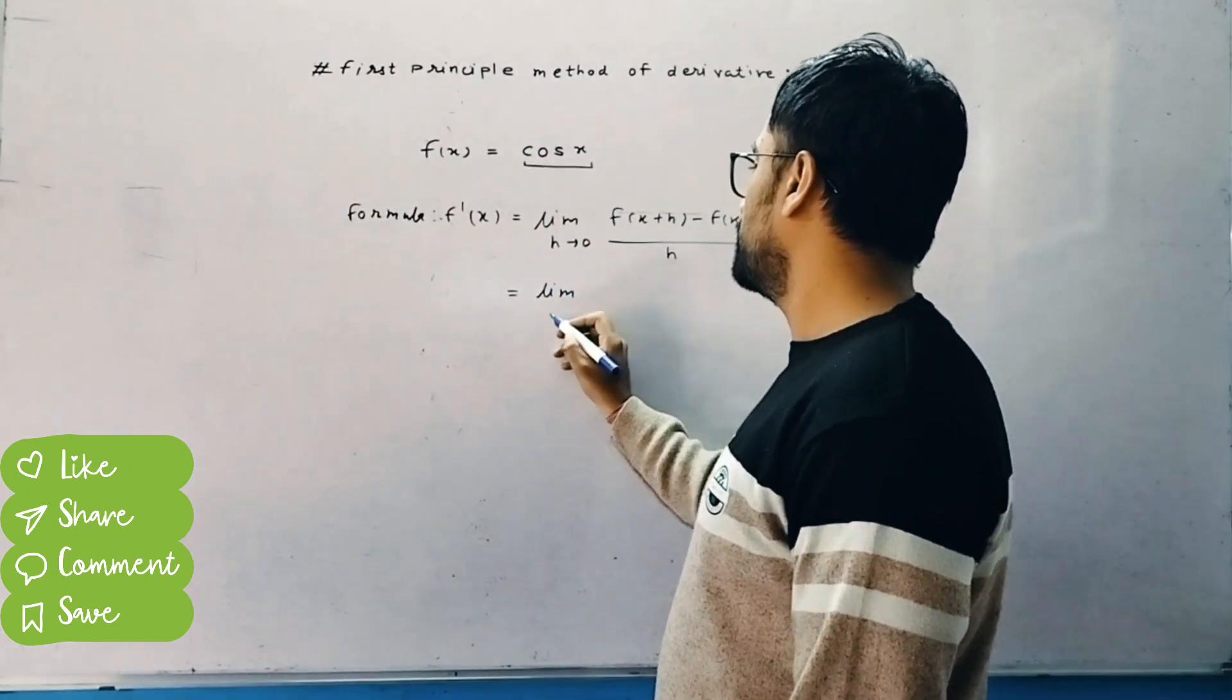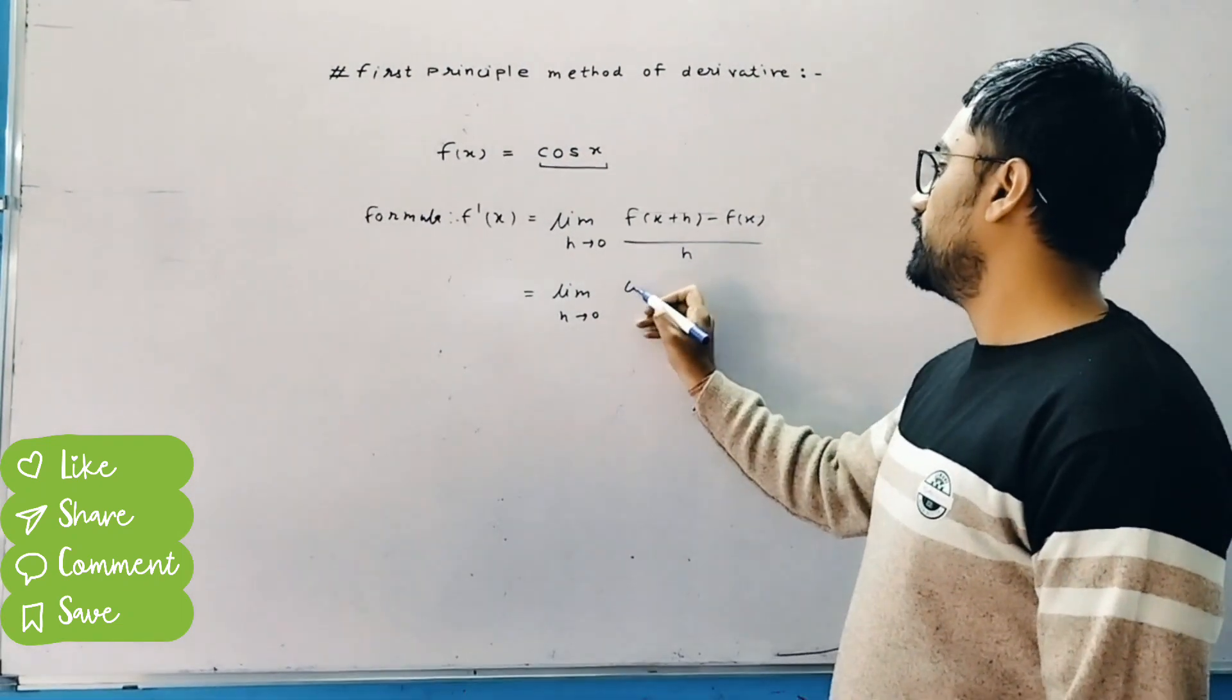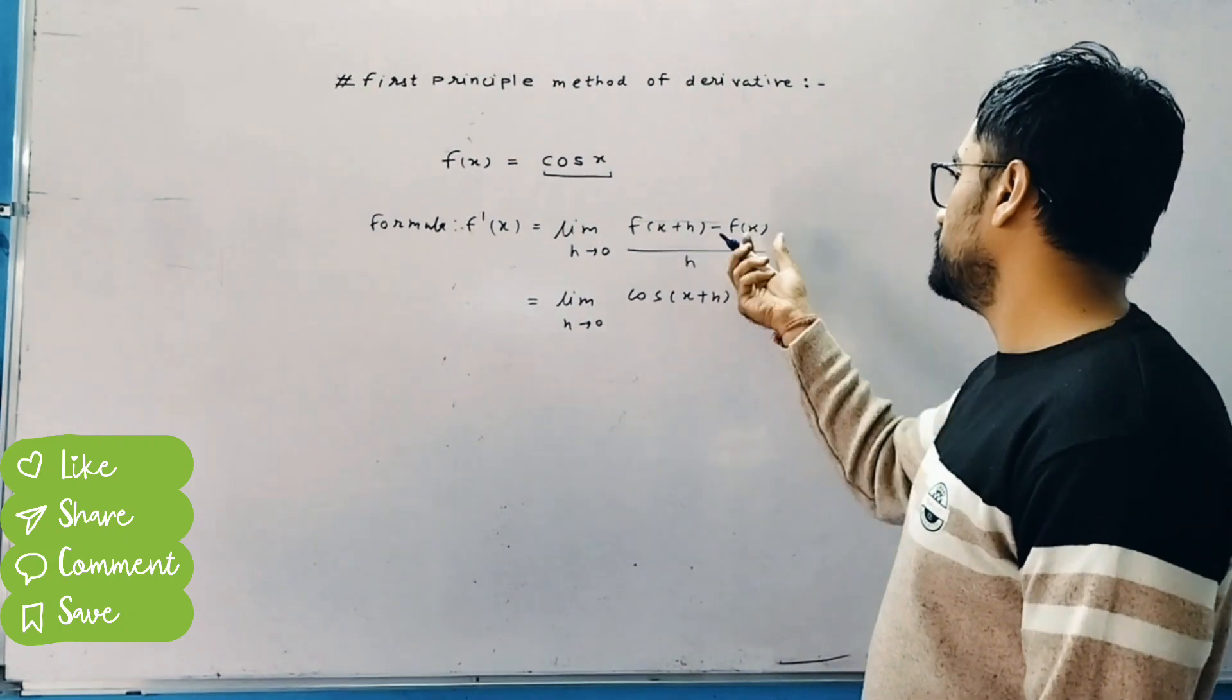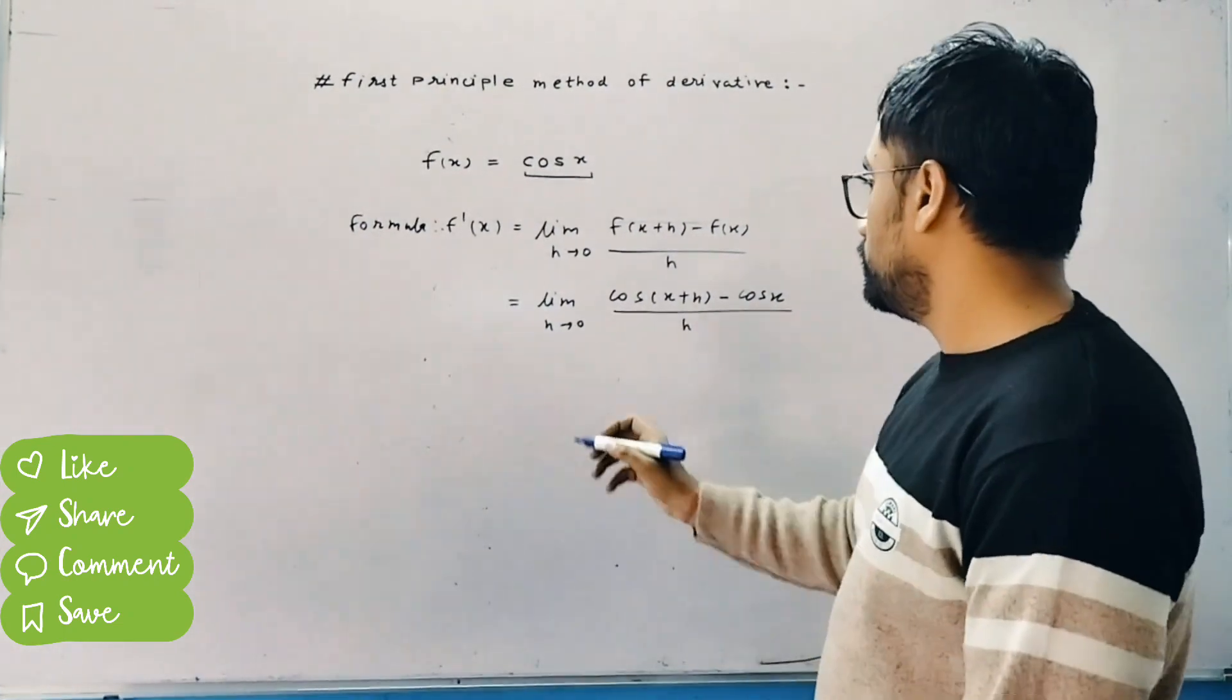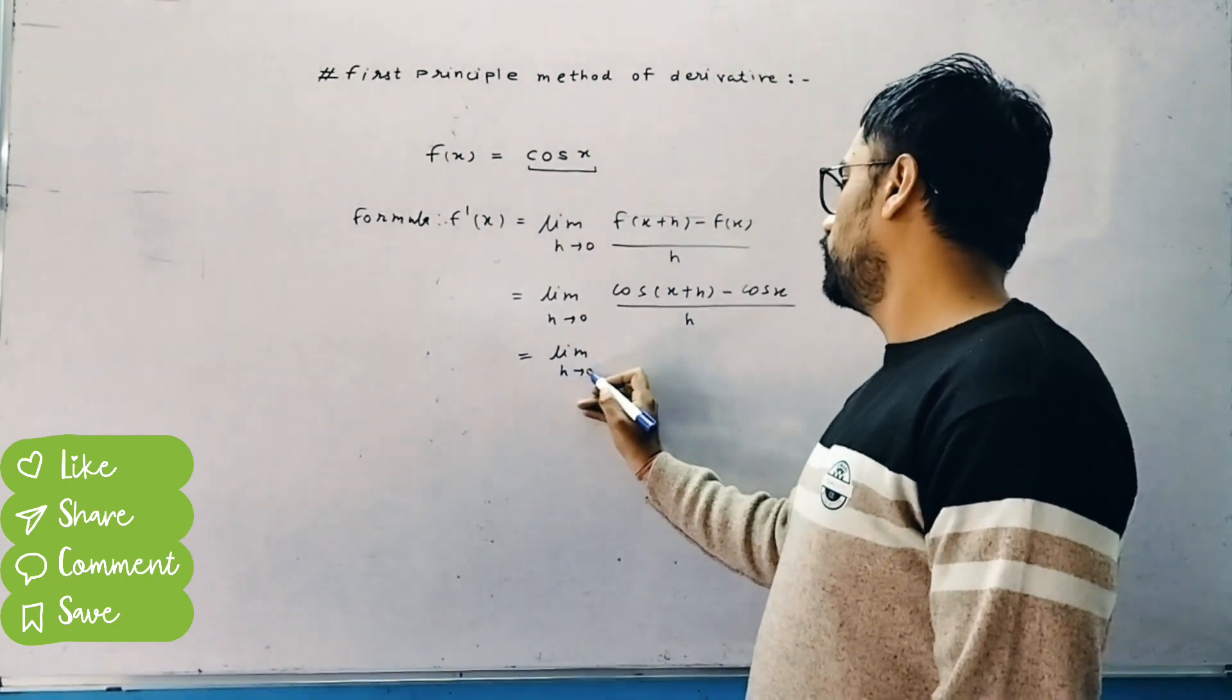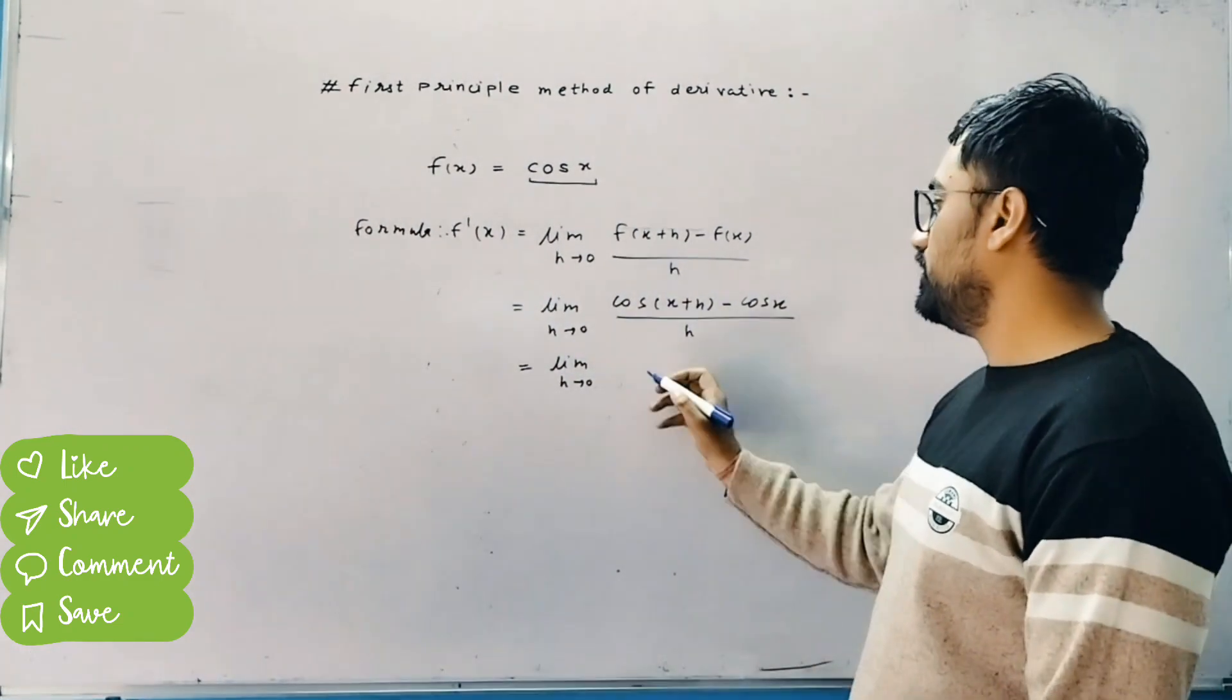Now let's work out this formula. We see we have the function f of x. We substitute the value for f of x, then we substitute for f of x plus h. We apply the formula and simplify.